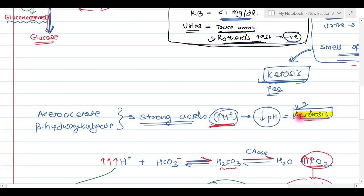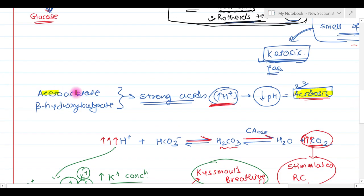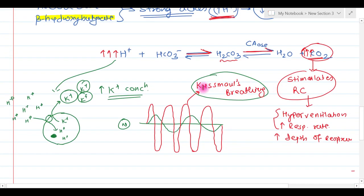To summarize the effects: there is acidosis — specifically metabolic acidosis, because acetoacetate and beta-hydroxybutyrate are metabolic acids. There is Kussmaul's breathing, and there is increased potassium concentration in the extracellular fluid.